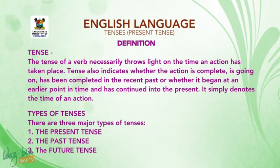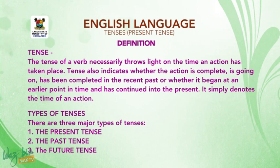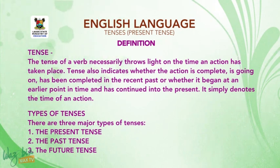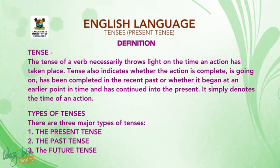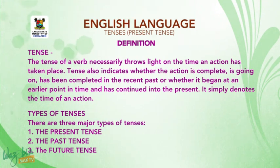Let us look at the types of tenses. There are three major types of tenses: namely the present tense, the past tense, and the future tense.